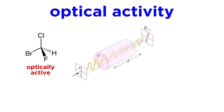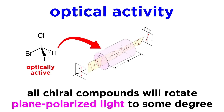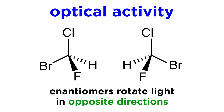Any chiral compound will be optically active, meaning that it will rotate plane polarized light by some angle depending on the structure of the molecule, as measured and analyzed on the other side of the molecule with respect to the light source. When looking at a pair of enantiomers, they will rotate this light by the same angle, but in opposite directions.